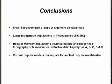From all this, I would like to conclude that these small kin-associated groups that we see in the Book of Mormon are at genetic disadvantages. There were large indigenous populations in Mesoamerica at 600 B.C. The Book of Mormon populations assimilated into the ancient genetic topography of Mesoamerica with these mitochondrial haplotypes A, B, C, D, and X. So do Book of Mormon people have the same mitochondrial haplotypes as Native Americans? Yes — they were assimilated in, but they were a small part participating in a specific geographical area.